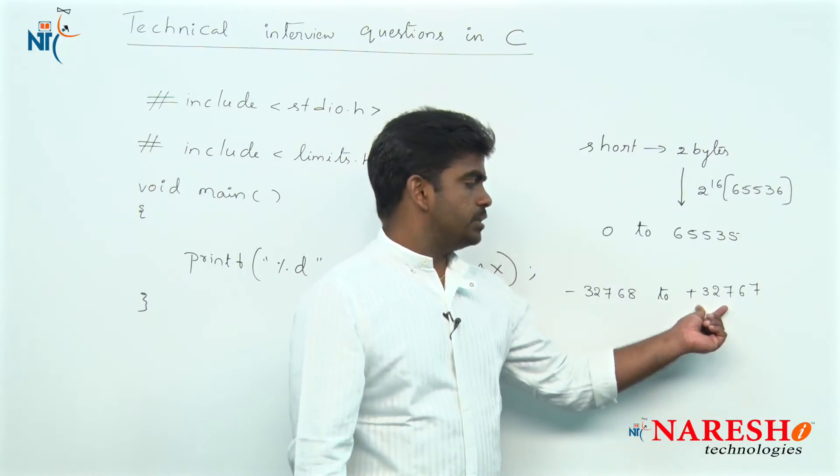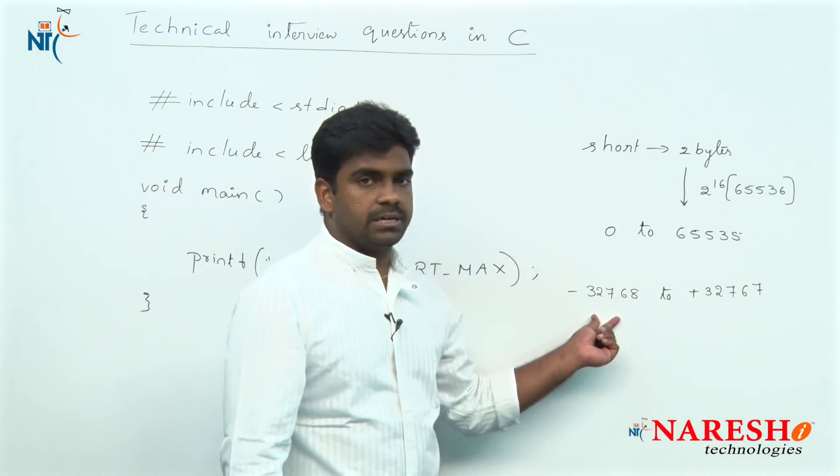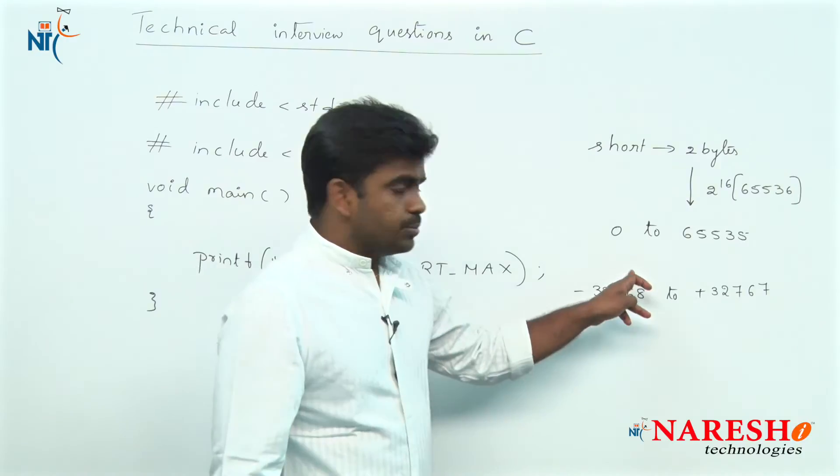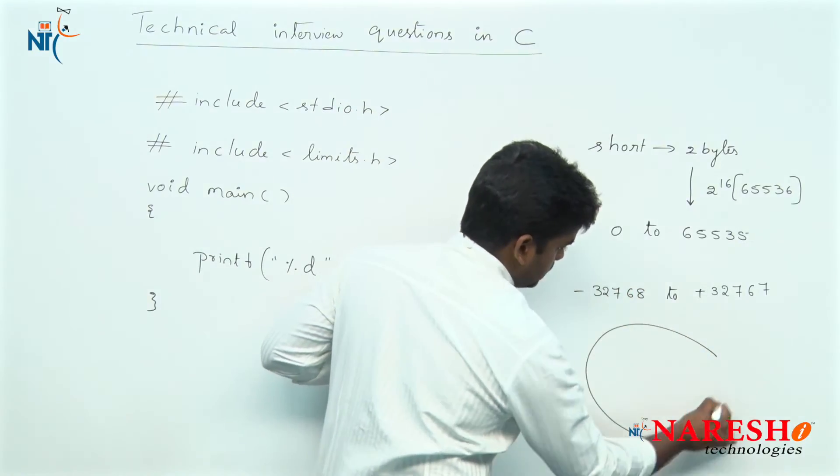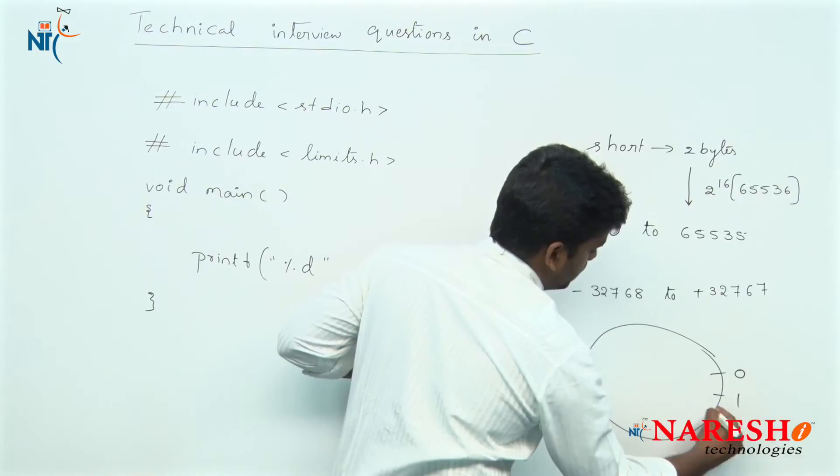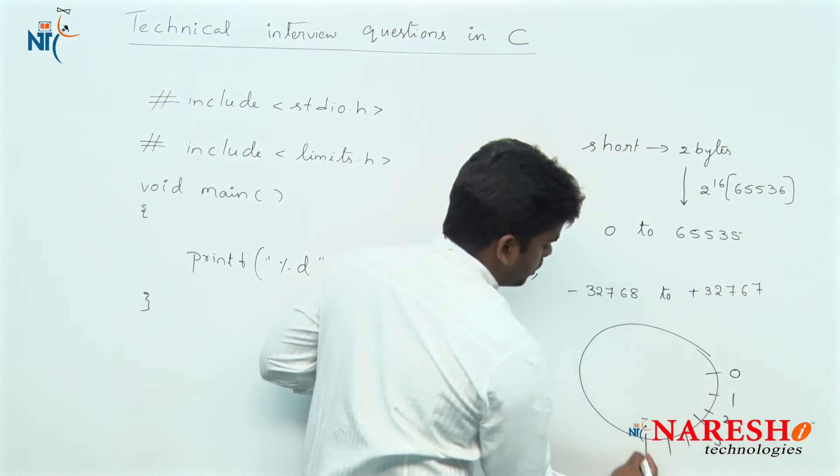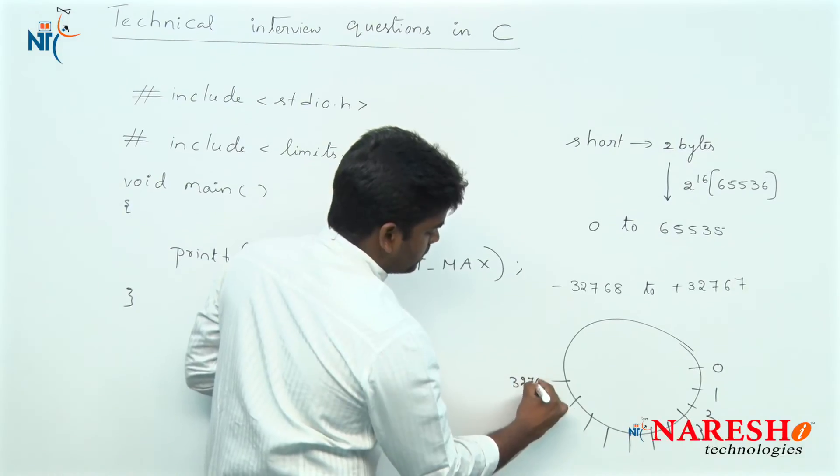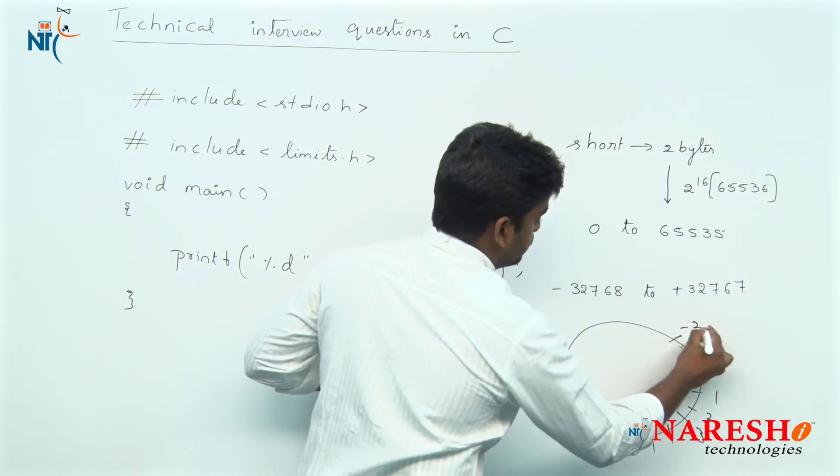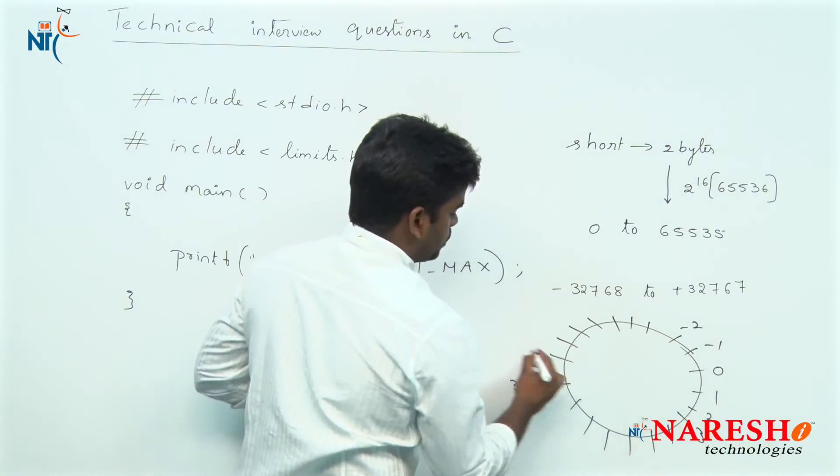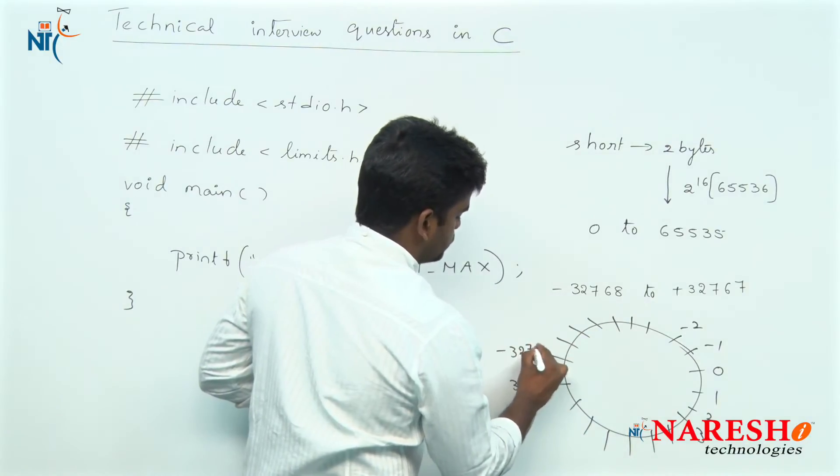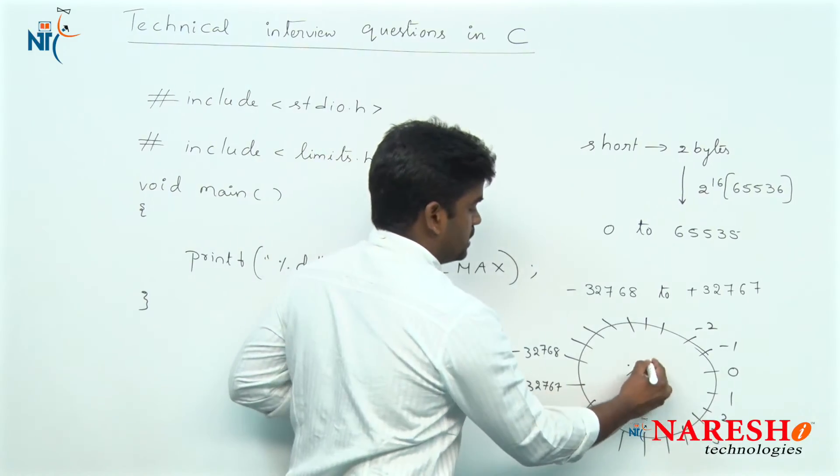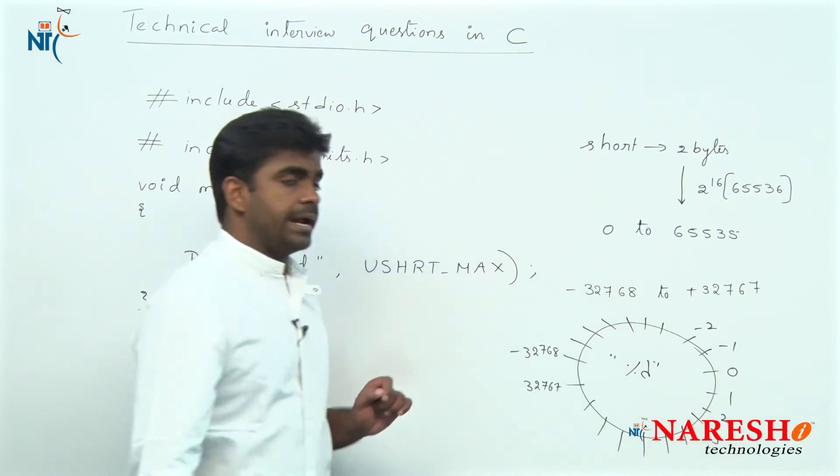Total 32,768 plus 32,768 is 65,536. Suppose here if you write in the form of a circle to understand clearly 0, 1, 2, 3 and so on. The maximum positive value is 32,767 and the maximum negative value we can store is minus 32,768. This is the percentage d circle which is the signed short circle.